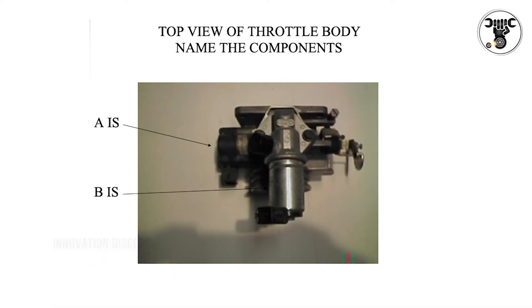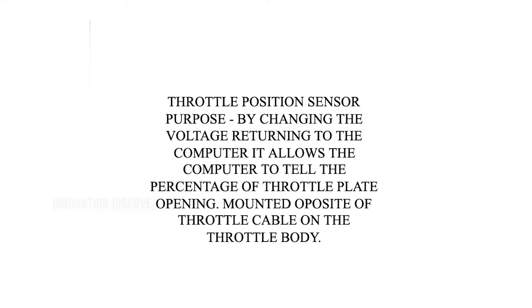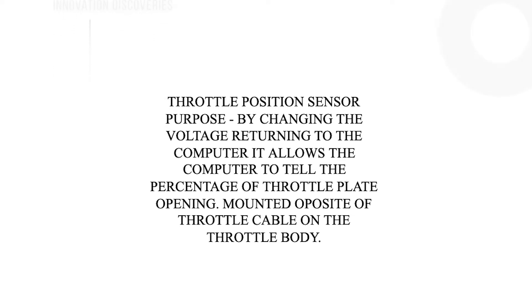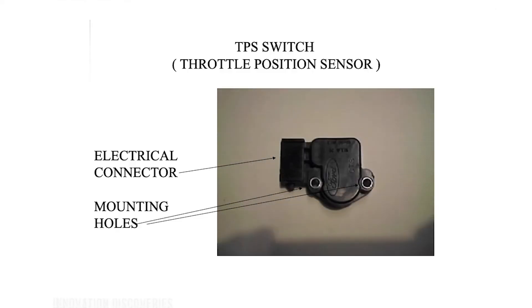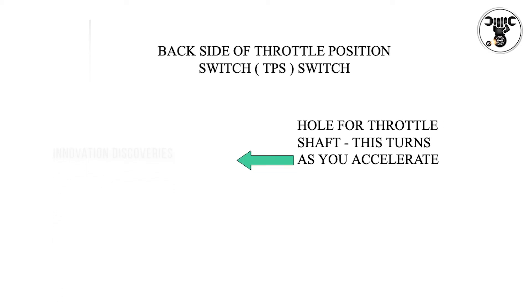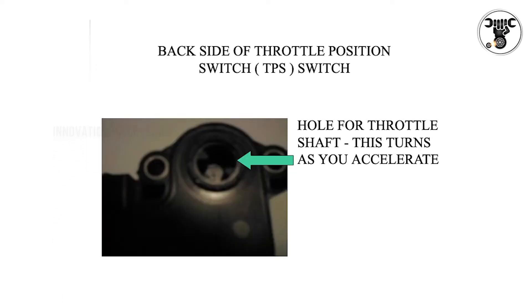Throttle position sensor purpose: by changing the voltage returning to the computer, it allows the computer to determine the percentage of throttle plate opening. It is mounted opposite the throttle cable on the throttle body. Both the TPS switch front and back side views are shown.